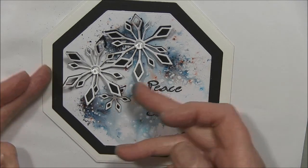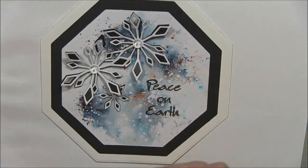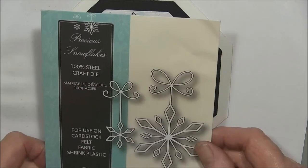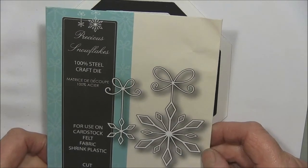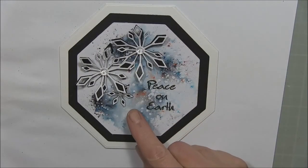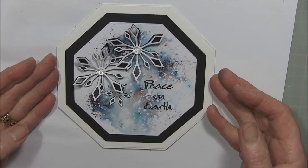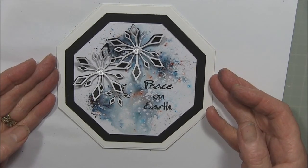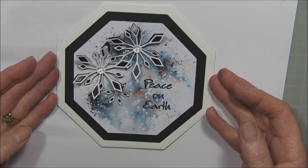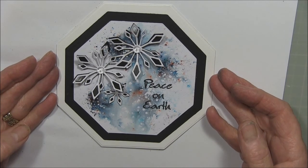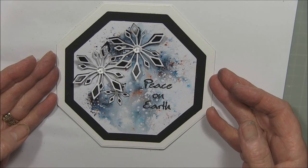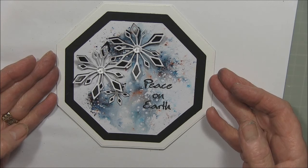And then two large snowflakes from Precious Snowflakes from Memory Box. Two of the large and one of the small one there. And I've cut them twice each, both in white cardstock and in black cardstock underneath, finishing it all off with a Clarity stamp, Peace on Earth. I think that's really pretty and it only uses black, no other color from your Brusho repertoire.